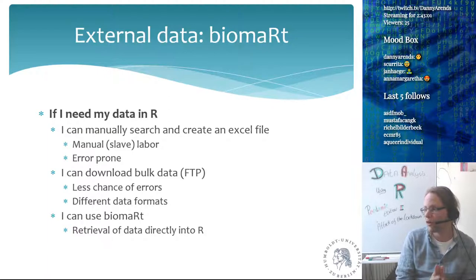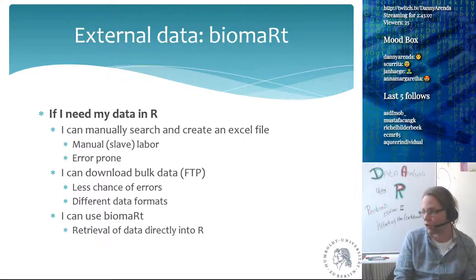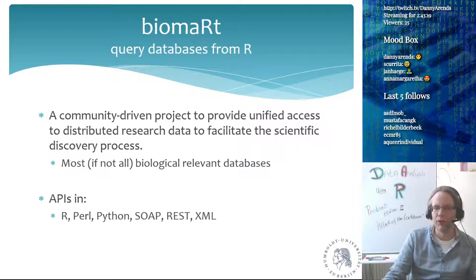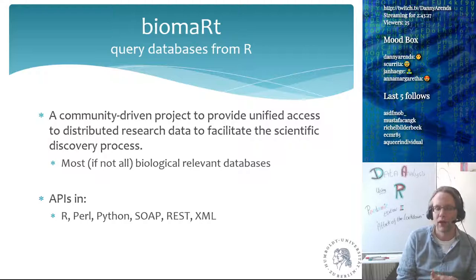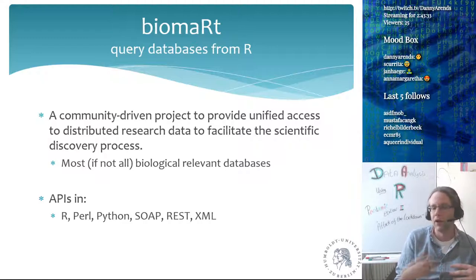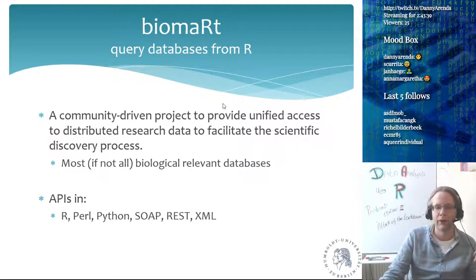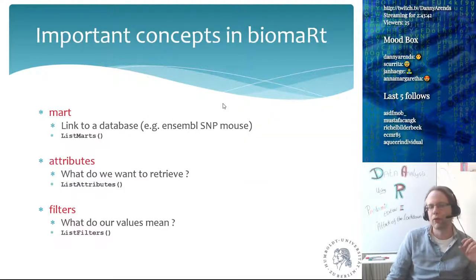Biomart is an R package that allows you to retrieve data directly from major biological databases like Ensembl and UCSC. It's a community project providing unified access to distributed research data to facilitate scientific discovery. It provides access to most, if not all, biologically relevant databases. It's not R-specific — you can also use it from Perl, Python, XML, or a REST API — but we'll use R since this is an R lecture.